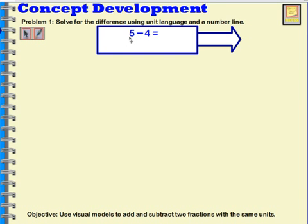In this case, when we just look at 5 minus 4, what we're doing is we're saying that we have 5 ones and we're subtracting 4 of those ones. 5 ones minus 4 ones is equal to 1 one.